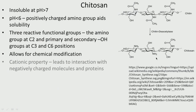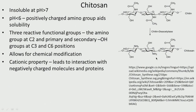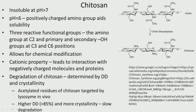Chemical modification is very important with chitosan. Its cationic property leads to interaction with negatively charged molecules — negatively charged proteins start interacting with chitosan. Degradation is determined by the degree of deacetylization and crystallinity. The acetylated residues of chitosan are targeted by lysozyme. Higher degree of deacetylization leads to more crystallinity and slower degradation. Whereas if there is less deacetylization and less crystal structure, degradation is much faster.